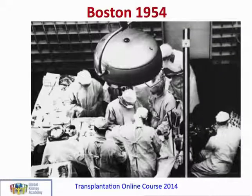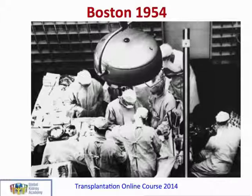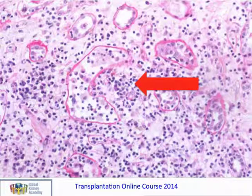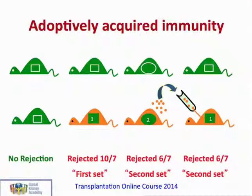The first successful human transplant was carried out in Boston in 1954 between identical twins. Previous transplants had been carried out in the 1930s and 40s, but all had failed due to severe, unstoppable rejection. When scientists looked at the kidneys removed from patients who had lost grafts due to rejection, they found a heavy infiltrate of lymphocytes, shown here as dark cells in the renal interstitium. It was also in the 1950s that a famous experiment was carried out by Sir Peter Medawar, establishing lymphocytes as the main effector cells in transplant rejection.